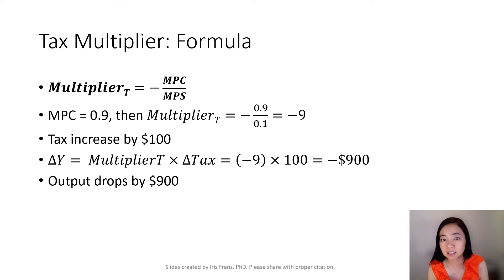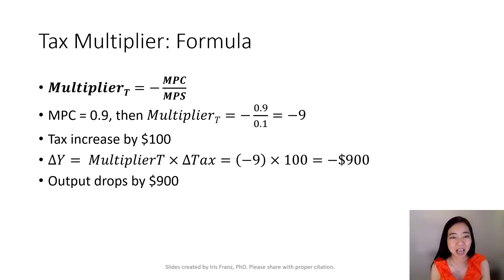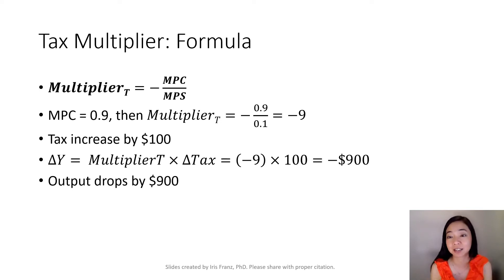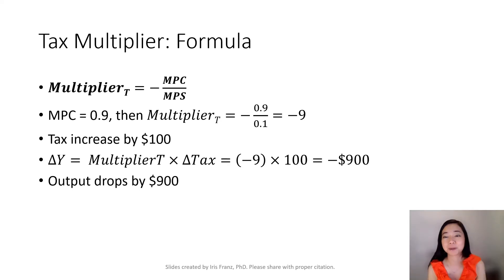So if the tax increases by $100, our output will go down by how much? Negative 9 times 100 equals negative 900. So your output would drop by $900.